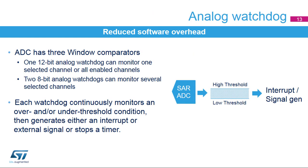Each ADC has three integrated analog watchdogs with high and low threshold settings. The ADC conversion value is compared to this window threshold. If the result exceeds the threshold, an interrupt or external signal can be generated, or a timer can be immediately stopped without CPU intervention.